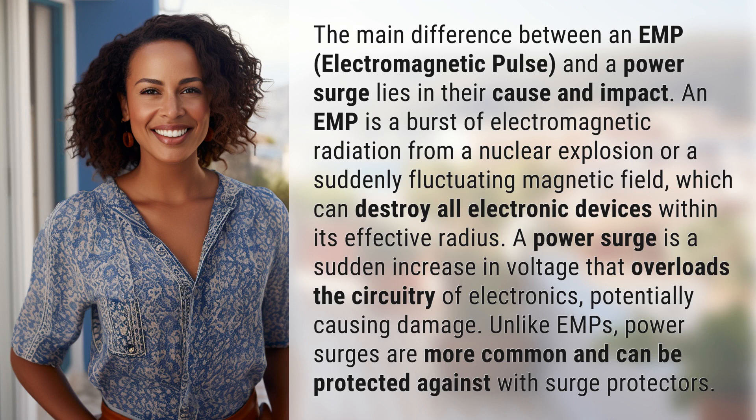An EMP is a burst of electromagnetic radiation from a nuclear explosion or a suddenly fluctuating magnetic field, which can destroy all electronic devices within its effective radius.